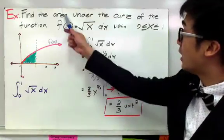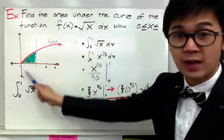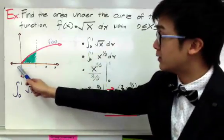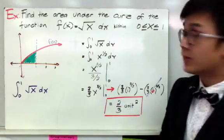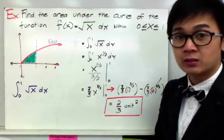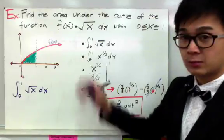That means the area under the curve for the function f of x dx within 0 to 1 is equal to 2 thirds unit squared. And that's how we use the definite integral in solving problems similar to this one.